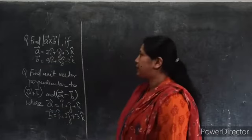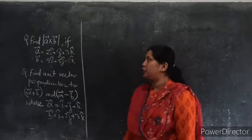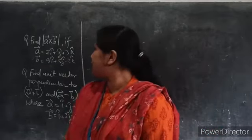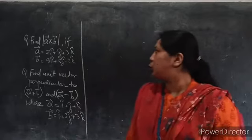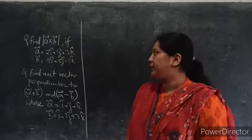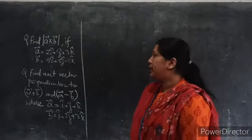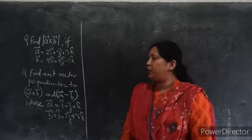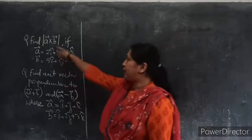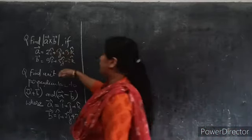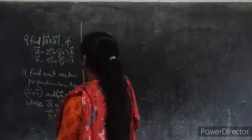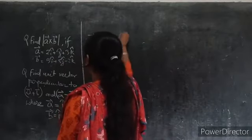Your first question is: find the magnitude of A cross B if vector A is given as 2i plus j plus 3k and vector B is given as 3i plus 5j minus 2k. First let us find the cross product. When you are doing A cross B, this is the cross product.